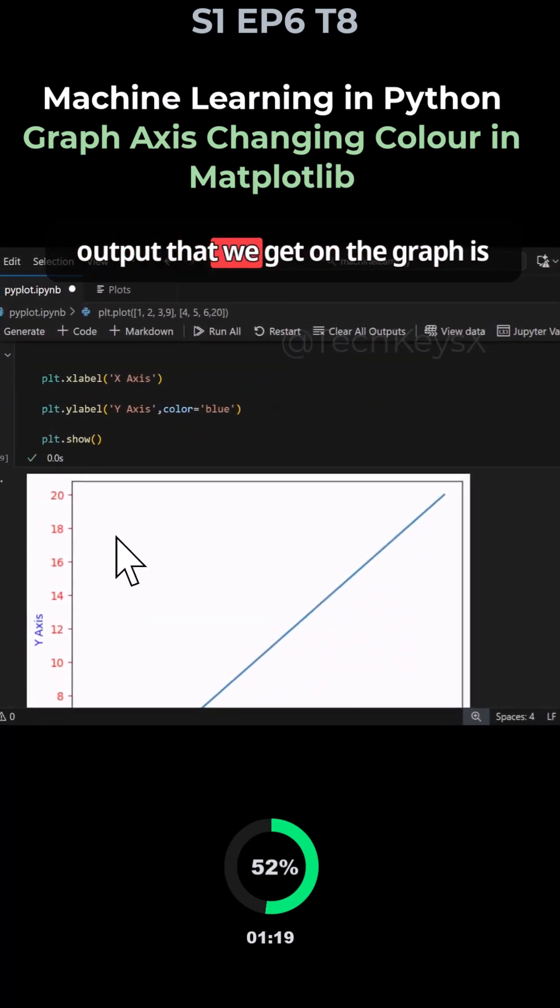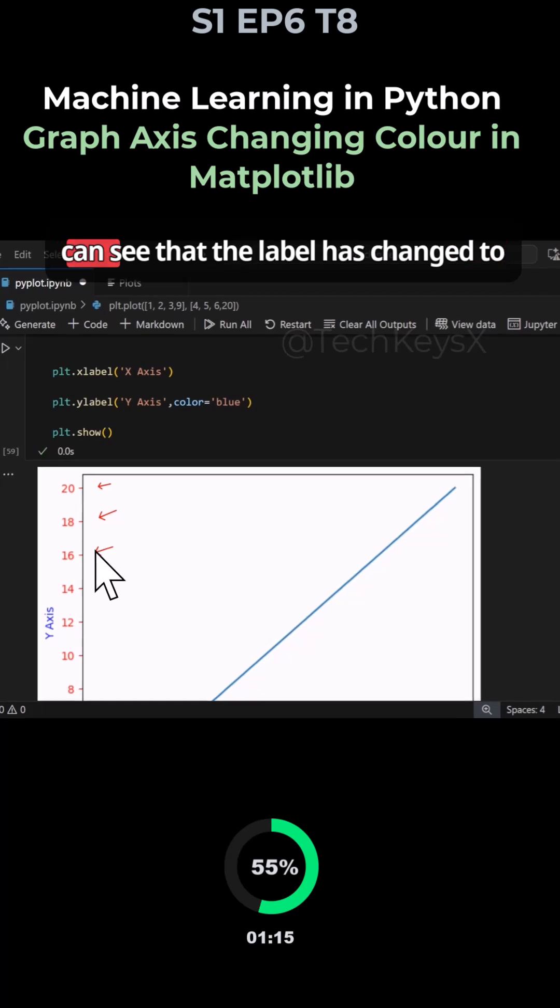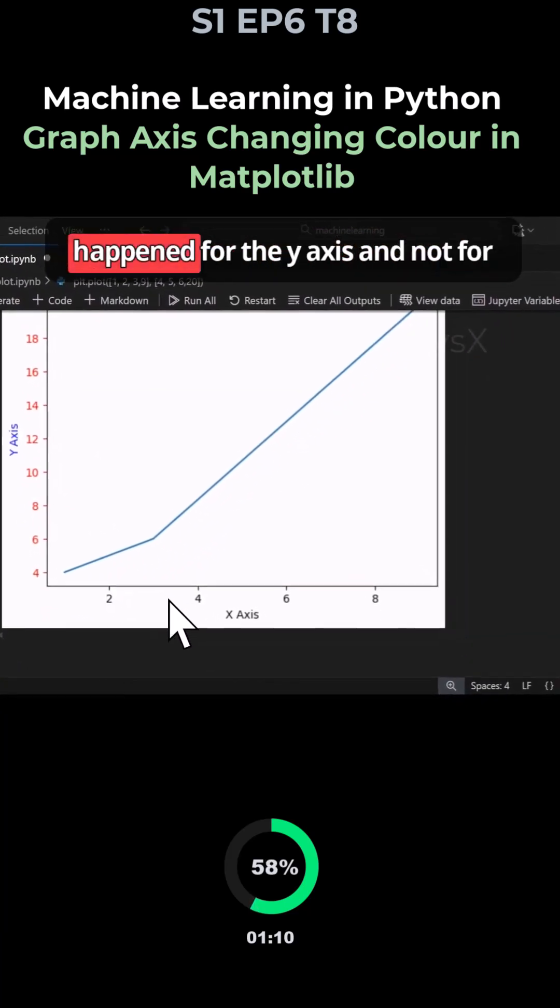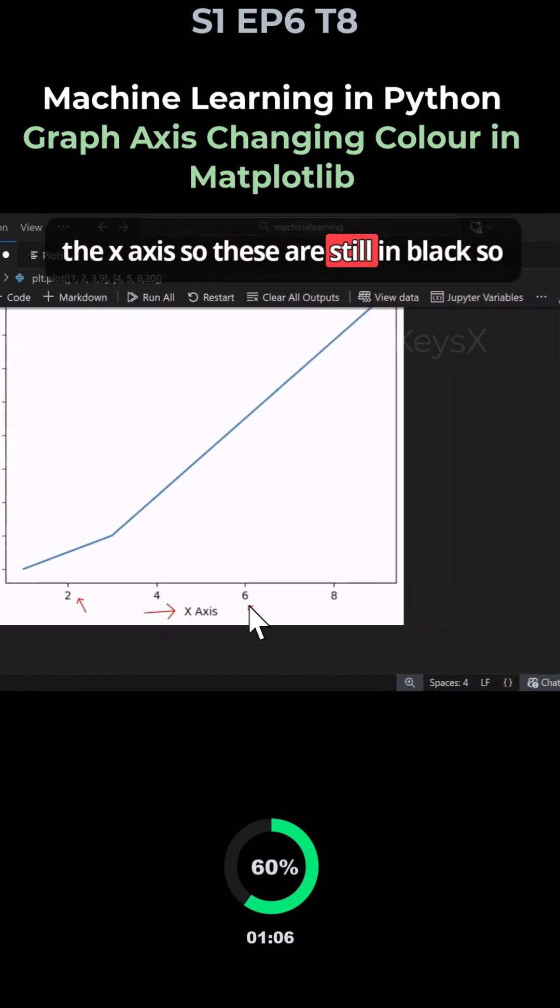If we were to run this you can see the output that we get on the graph is we get these in red over here and we can see that the label has changed to blue color. But notice this has only happened for the y-axis and not for the x-axis, so these are still in black.